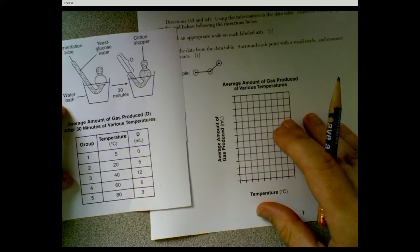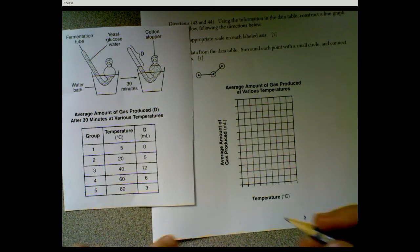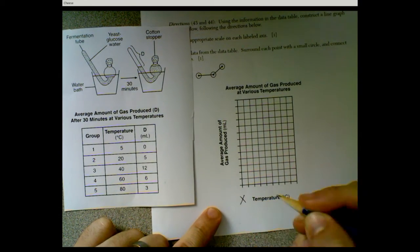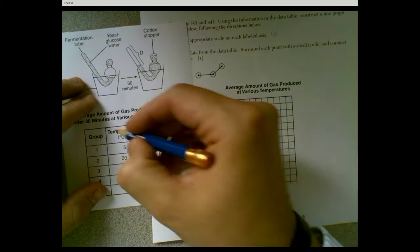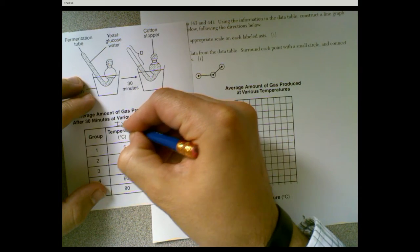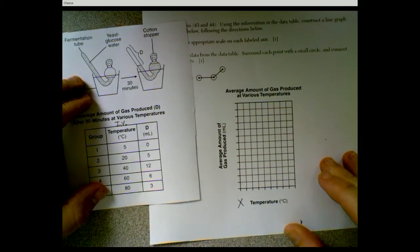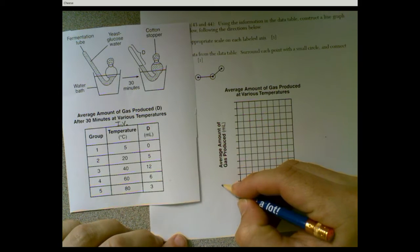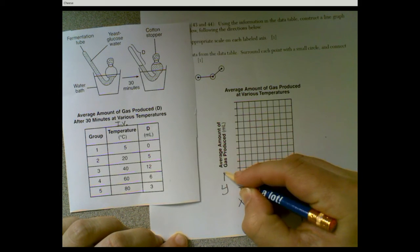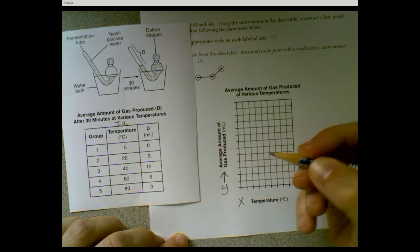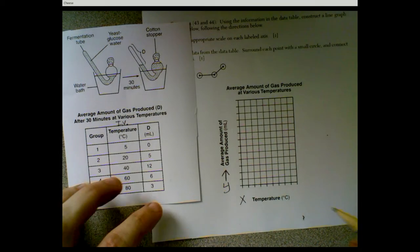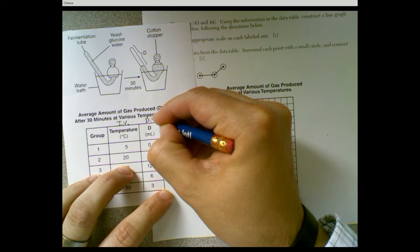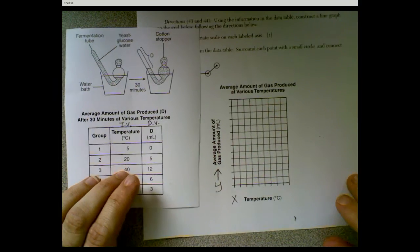So first let's talk about how this grid is going to be set up. Our temperature here is on our x-axis and by the way your independent variable always goes on your x-axis. That makes sense. We are varying the amount of temperature in each one of these setups. The y-axis over here, y to the sky, that's how I remember it, y goes up and down, is going to be our amount of gas produced. So that's our dependent variable which is the data that is collected.